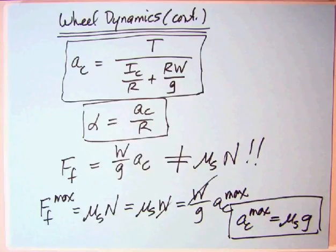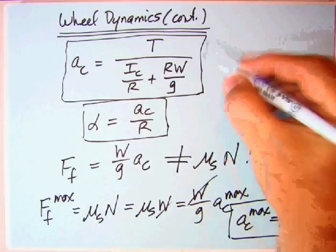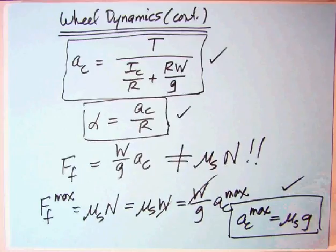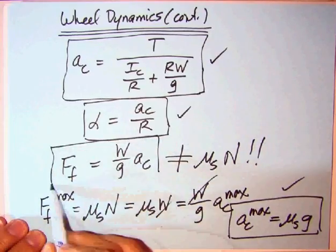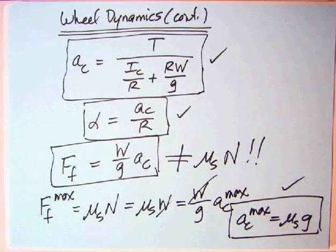They'll say what is the maximum acceleration? Well, it is mu_s G. They give you the weights and whatever, well it doesn't matter. So here you have all three things for a drive wheel: the acceleration based on the torque, the alpha once you find ac, and the friction force equals W over G times ac, not equal to mu_s N. If they're asking for the friction force, answer A will be mu_s N, it'll be wrong. But the maximum you can get out of any system is mu_s G. I think that's going to be enough here for this instructional companion. I'll continue on the next one with the push-pull wheel. I think that will be very interesting and then we'll compare the two sets of equations.